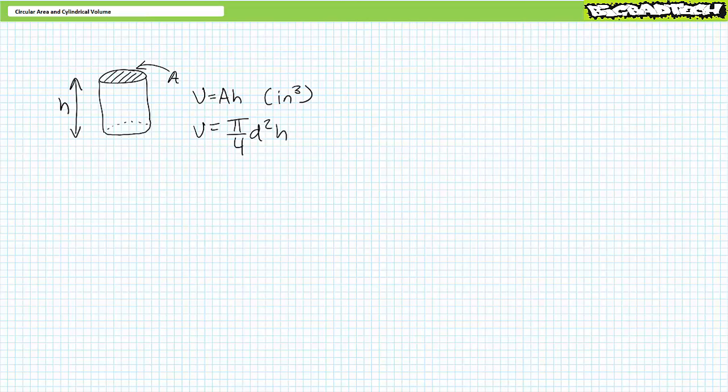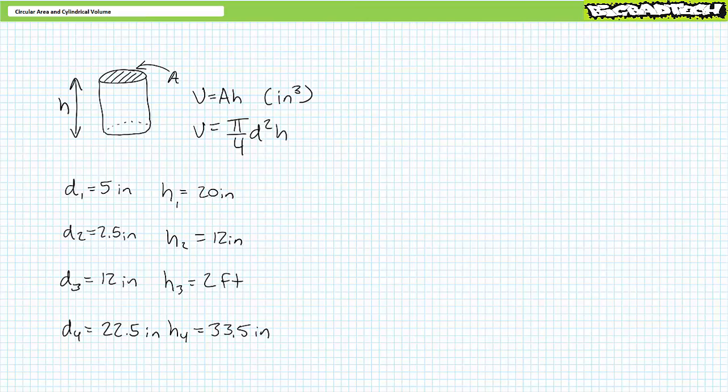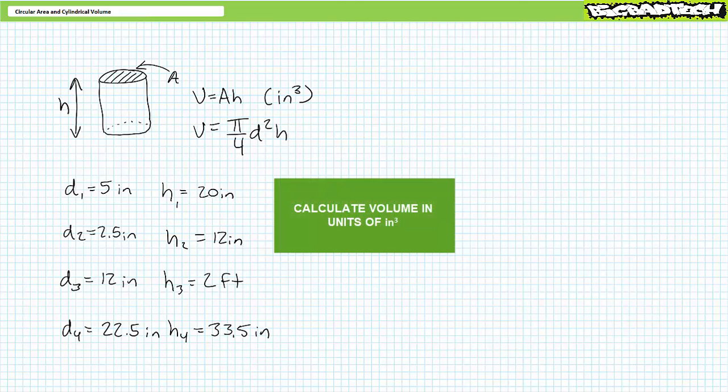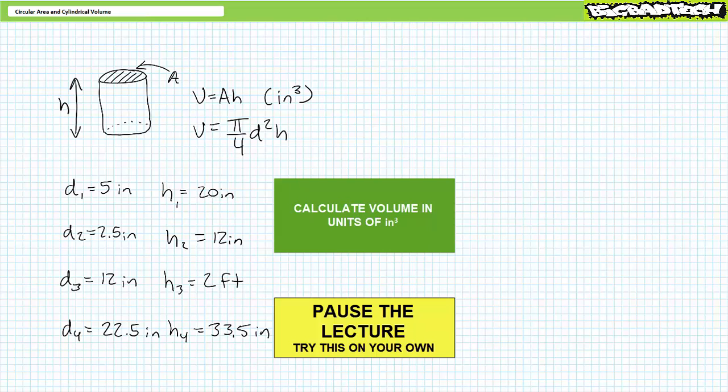Consider our first set of illustrated examples. Let's determine cylindrical volume in units of cubic inches given known height values. Circle 1 has a diameter of 5 inches and a height of 20 inches. Circle 2 has a diameter of 2.5 inches and a height of 12 inches. Circle 3 has a radius of 6 inches — diameter of 12 inches — and a height of 2 feet. Circle 4, the 55-gallon barrel, has a diameter of 22.5 inches and a height of 33.5 inches. Note that US customary units like inches, square inches, and cubic inches do not use engineering prefixes and must be expressed in their awkward entirety.